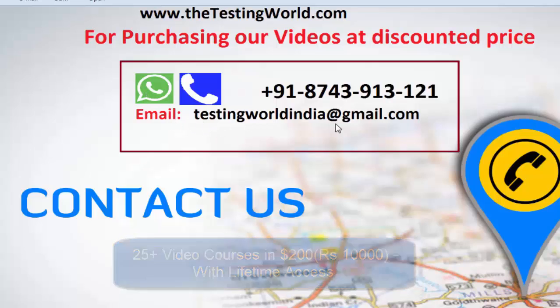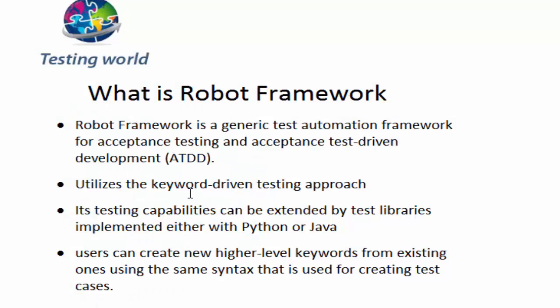In Robot Framework, for everything we have a keyword. If I want to open a browser, we have a keyword. If I want to enter some text into a text box, we have a specific keyword. If I want to click on any button, we have a keyword. So for every task we are going to perform, we have a keyword, and we can write complete test cases without any programming knowledge by using these keywords.